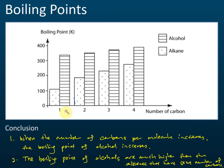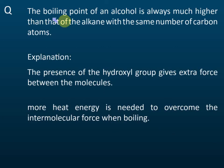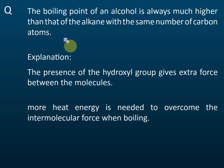To summarize: first, when the number of carbons increases, the boiling point increases. Second, when we compare to the boiling points of alkanes, the boiling points of alcohols are much, much higher. The boiling point of an alcohol is always much higher than that of the alkane with the same number of carbon atoms. Why?